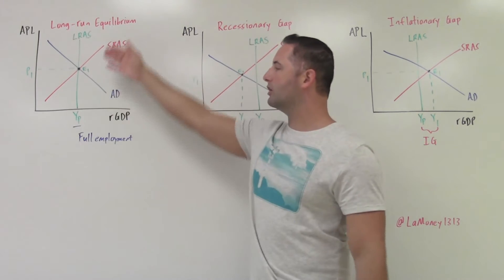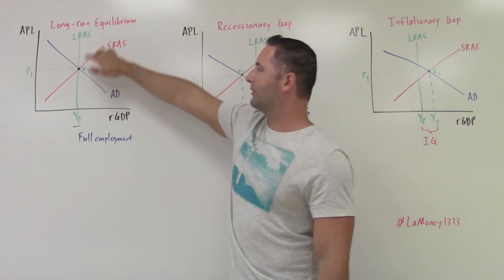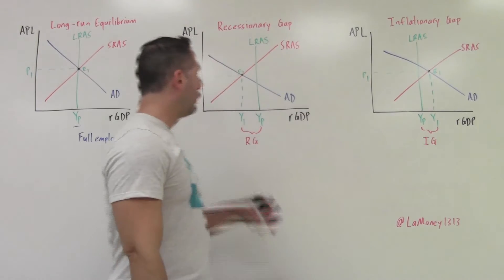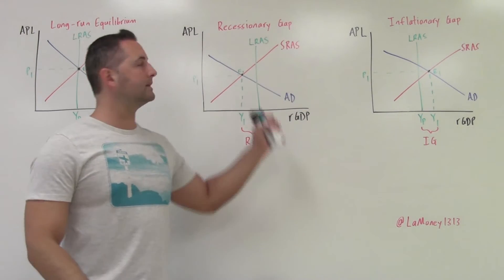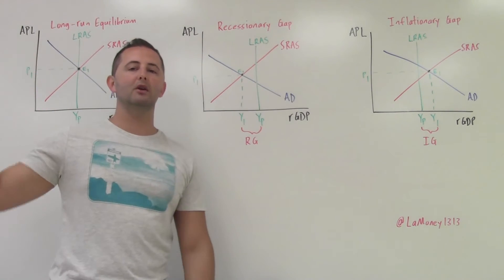When we're on the long-run curve, there is no cyclical unemployment. So that means that we are at the full level of unemployment. So natural rate of unemployment or full employment when we're on the long-run curve. On the other hand, in this center one, this is a recessionary gap.